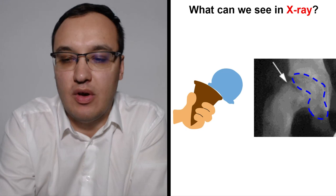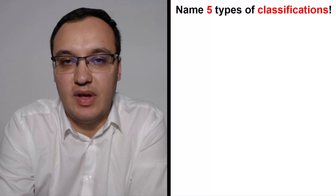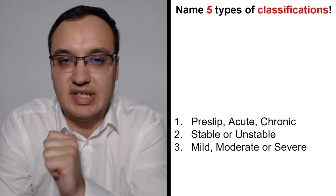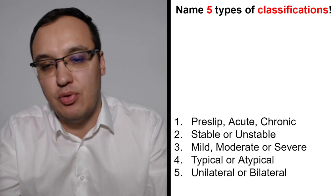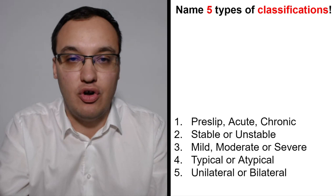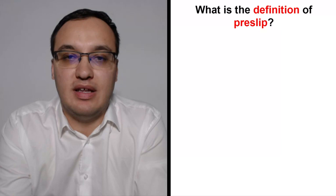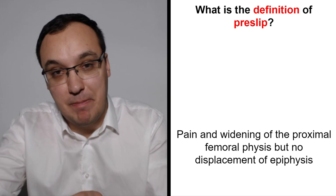We can classify SCFE in five ways: pre-slip, acute, or chronic; stable or unstable; mild, moderate, or severe; typical or atypical; and unilateral or bilateral. These classifications can be combined — for example, a patient can have an acute, stable, severe, atypical, unilateral disease.